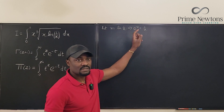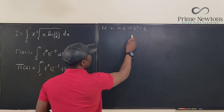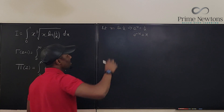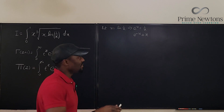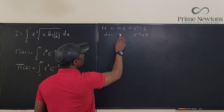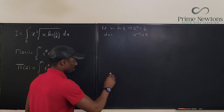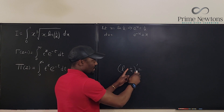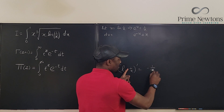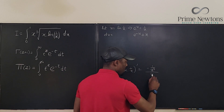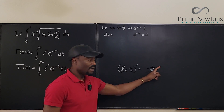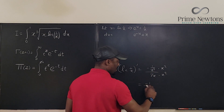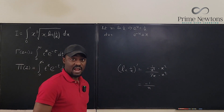If I take e of both sides, that implies e to the u equals 1 over x, and flipping gives e to the negative u equals x. Keep this in mind, we're going to come back to it. Now for du: the derivative of ln(1/x) — remember the derivative of ln of any argument is the derivative of the argument divided by the argument itself — that gives negative 1 over x squared divided by 1 over x. Simplifying by multiplying top and bottom by x squared gives negative 1 over x, so du equals negative 1 over x dx.